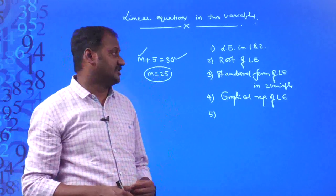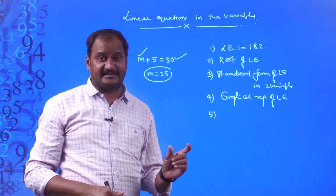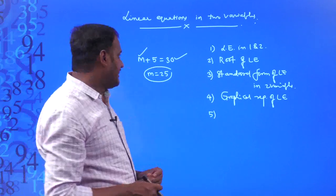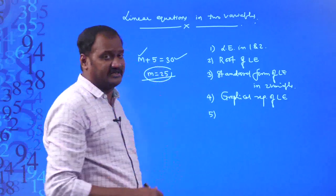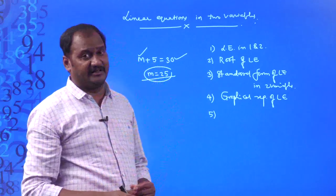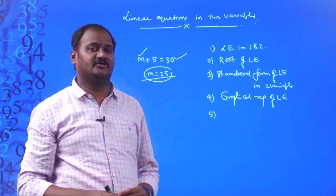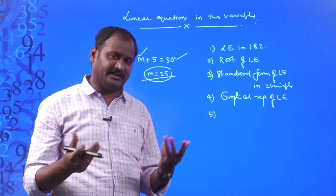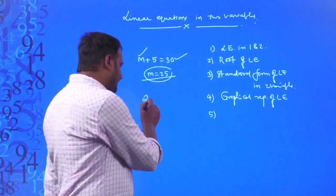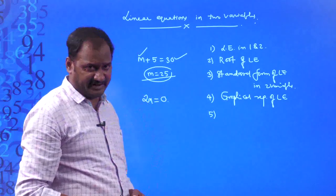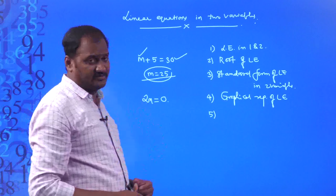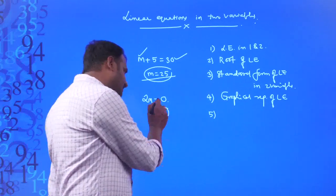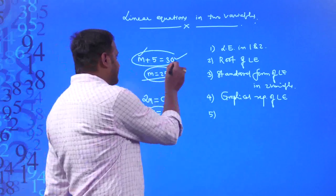Generally we consider variables x and y for further studies. Here m plus 5 equals 30, where m is the variable. m equals 25 is called a solution or root of the linear equation m plus 5 equals 30. Since it is a linear equation in one variable, it has only one solution. For example, 2x equals 0 is also a linear equation in one variable. 2 times 0 equals 0, so x equals 0 is the only solution for 2x equals 0.